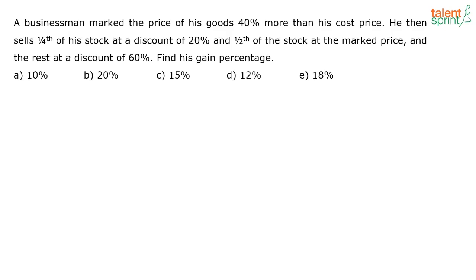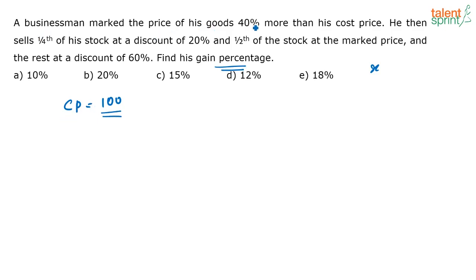To solve this question, the best way is to assume values. Assume the actual cost price of the goods is 100 rupees and then solve. Calculations become easier this way instead of taking cost price as x. Since they've only asked for the gain percentage, consider cost price as 100 and solve.